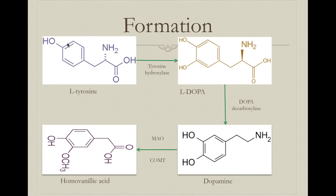To form dopamine, the body needs the amino acid L-tyrosine. L-tyrosine is very relevant because it has a catechol ring, so every catecholamine needs L-tyrosine to be synthesized. Once we have L-tyrosine, the enzyme tyrosine hydroxylase allows for hydroxylation and we synthesize L-DOPA. L-DOPA is relevant because it can also be used as a drug — we administer L-DOPA to Parkinson's patients to increase dopamine levels. Once L-DOPA reaches the brain, the enzyme DOPA decarboxylase transforms it into dopamine.